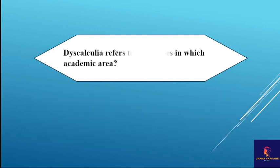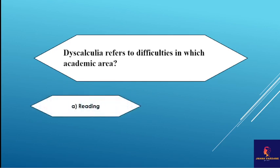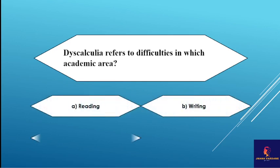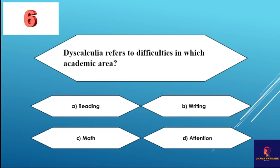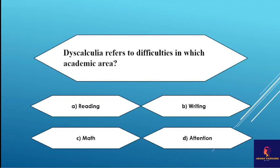Next question: dyscalculia refers to difficulties in which academic area? Options: reading, writing, math, and attention. Dyscalculia — what difficulties does it refer to, in which academic area? The correct option is maths.